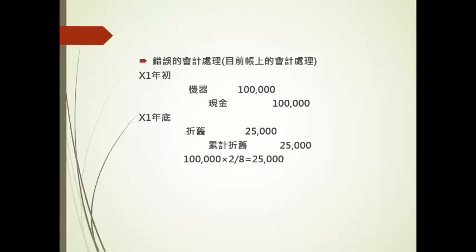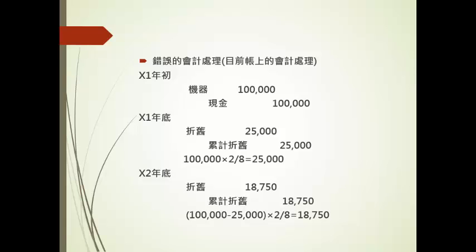因为它挂的是资产科目，年底时要提列折旧，所以它会借折旧贷累计折旧25,000元。这题采用倍数余额递减法，折旧率是直线法的两倍，第一次提折旧的基础是成本10万元，乘上8分之2，答案是25,000。第二年年底，提列折旧的基础是原始成本10万扣掉第一年累计折旧2.5万，账面金额7.5万，乘上折旧率8分之2，答案是18,750。